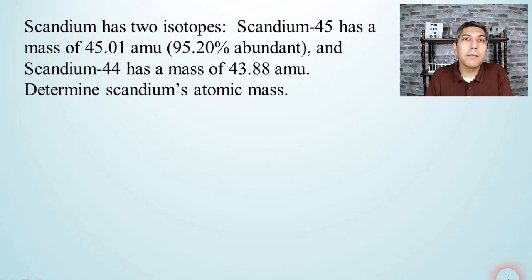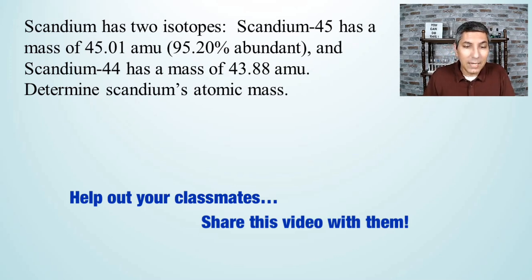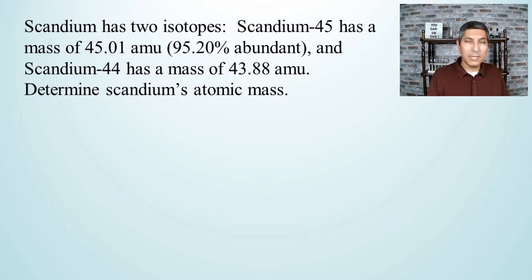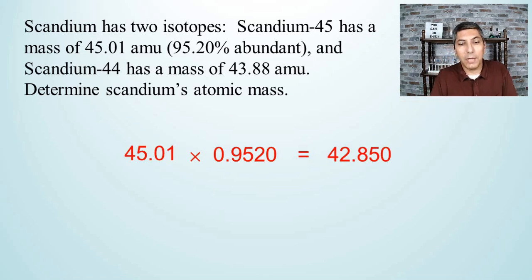This time, we'll take a look at scandium. It says scandium has two isotopes. Scandium-45 has a mass of 45.01 AMU and it's 95.20% abundant, and scandium-44 has a mass of 43.88 AMU. Determine scandium's atomic mass. So once again, we're going to take that first isotope. It has a mass of about 45.01, and we'll multiply that by the decimal equivalent of its abundance, which is 0.9520. When we multiply that across, we get an answer of 42.850. I'm not rounding off to the probably the correct number of significant figures, I'm just doing this to show you that we're going to get an answer that's really close to the right answer.